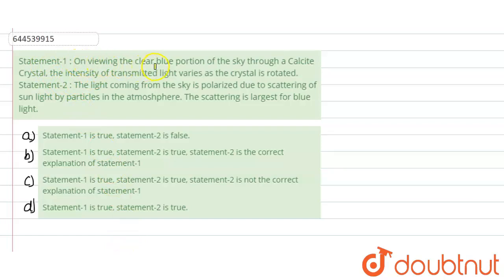Statement one says that on viewing the clear blue portion of the sky through a calcite crystal, the intensity of transmitted light varies as the crystal rotates. Statement two says the light coming from the sky is polarized due to scattering of sunlight by particles in the atmosphere. The scattering is largest for blue light.